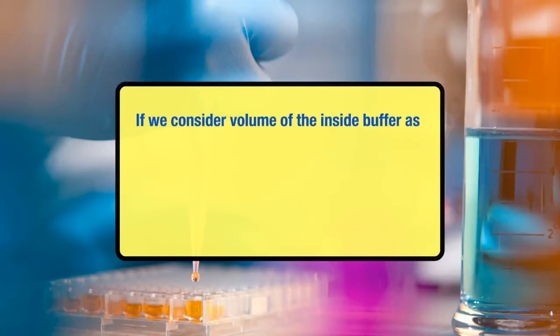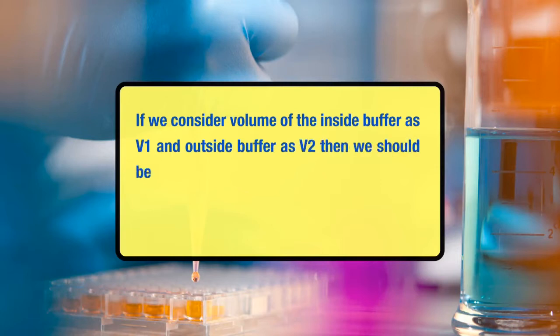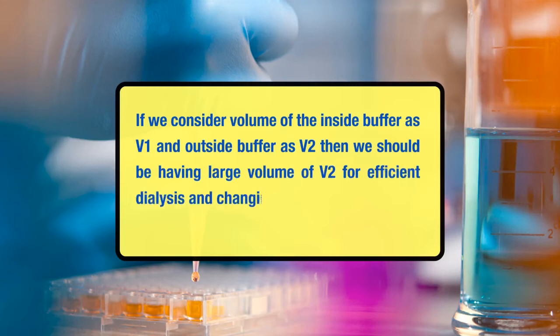With regular change of dialysate and time, the concentration of the contaminant will decrease from the sample solution. Since dialysis depends upon concentration difference within and outside the dialysis bag, the efficiency of the process is determined by the degree of difference between the two. If we consider volume of the inside buffer as V1 and outside buffer as V2, then we should have a large volume of V2 for efficient dialysis and change it when equilibrium is reached.